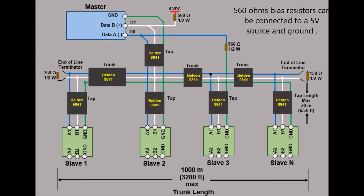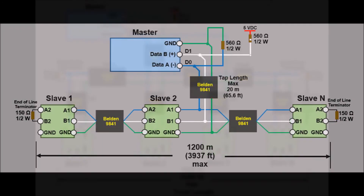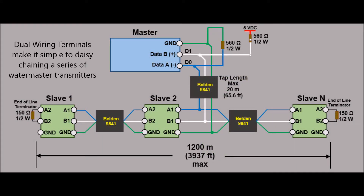A pair of 560 ohm resistors can be connected on the RS-485 balanced pair to bias the signals — a pull-up resistor to a 5-volt source on the D1 circuit and a pull-down resistor to the common circuit on the D0 circuit. The Watermaster has dual wiring terminals for RS-485 connections, providing a means of connecting the in and out bus cables for daisy chaining directly onto the bus.